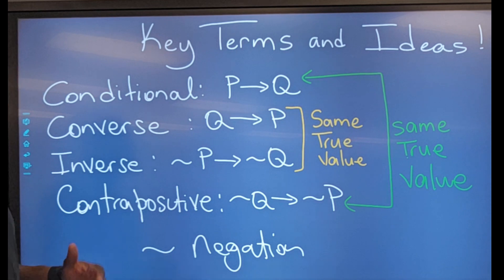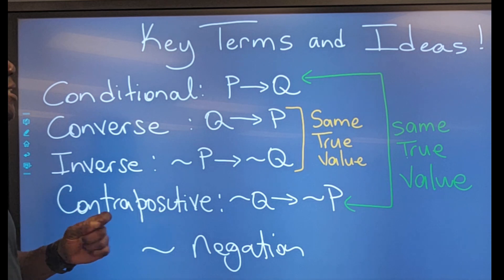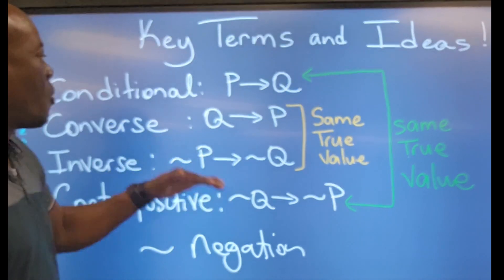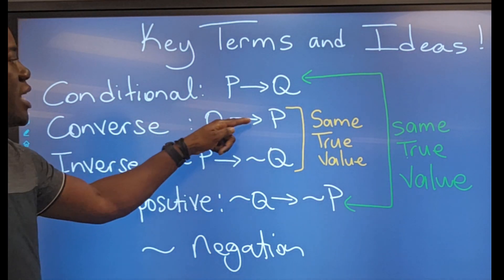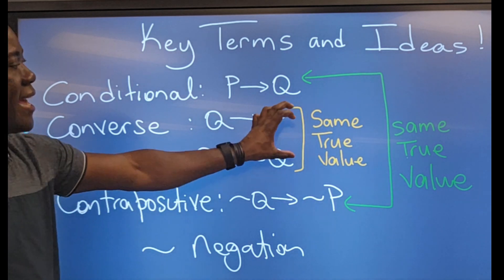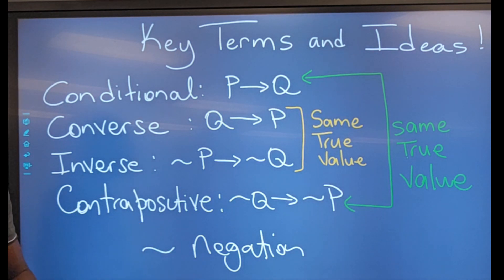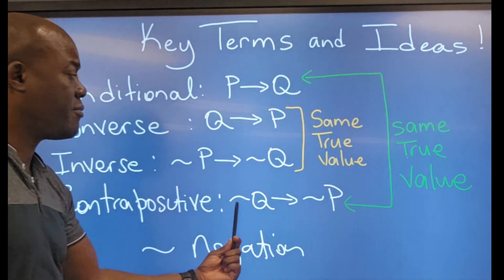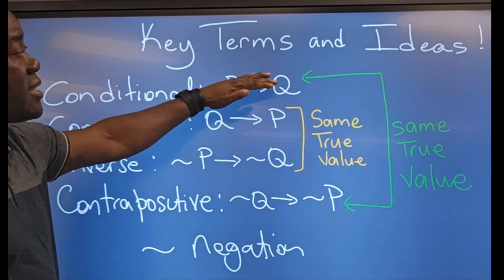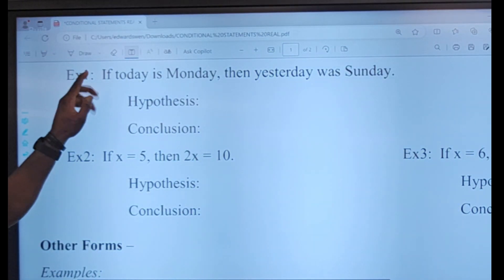The converse and the inverse have the same truth value — if the converse is true the inverse is true, and if the converse is false the inverse will be false. The conditional statement and the contrapositive also have the same truth value: if my conditional statement is false then my contrapositive will also be false, and if the conditional statement is true the contrapositive will be true.